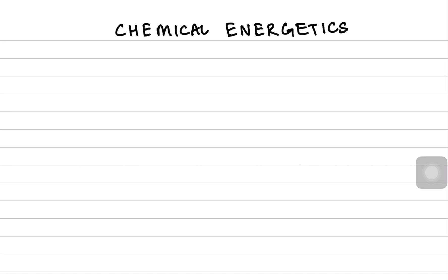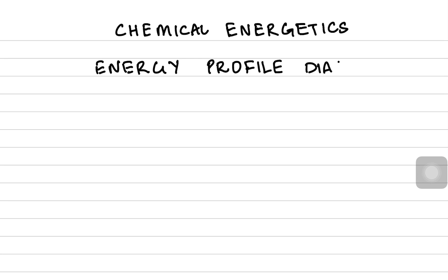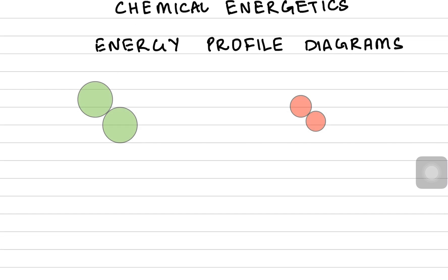Energy profile diagrams — if you remember O-level chemistry, we have talked about energy profile diagrams, where it was a graphical analysis of the progress of any reaction as a function of energy. So imagine a chlorine molecule in the gaseous state; it has a Cl–Cl bond, and a hydrogen molecule which has the H–H bond.